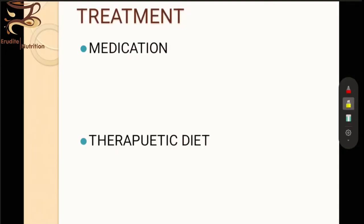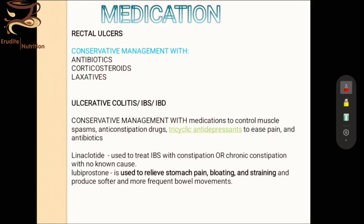Now let's discuss treatment — how to heal your body from conditions like rectal ulcer and ulcerative colitis. First, we'll give a brief description of what types of medications are given as an option, and then we'll discuss the therapeutic diet. When it comes to medication, rectal ulcers and ulcerative colitis are both dealt with conservative management, meaning we mostly treat the symptoms while some drugs address the actual problem.